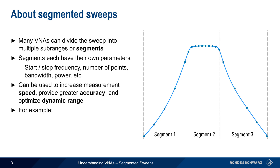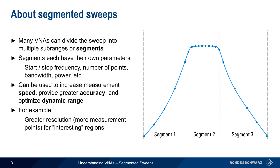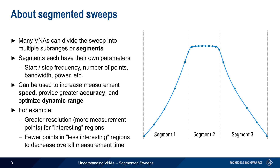As shown in this example, more closely spaced points can be used to provide greater resolution for the more interesting parts of a trace, such as the passband of a filter. And fewer points can be configured for less interesting regions in order to reduce overall measurement time.